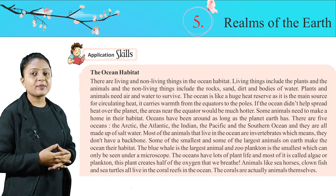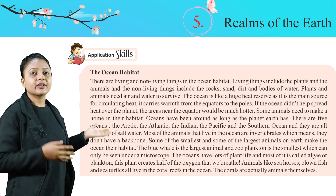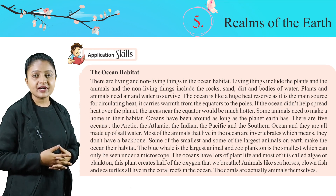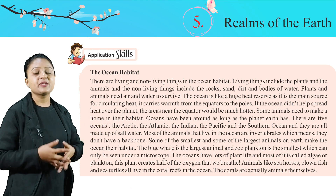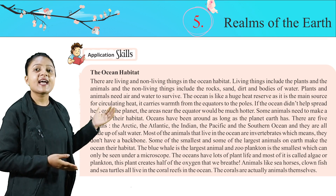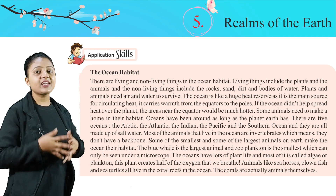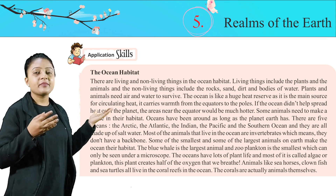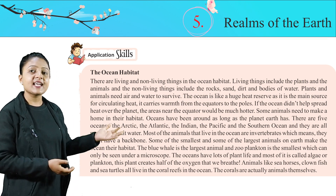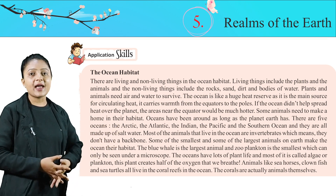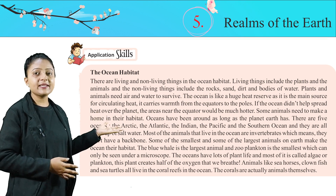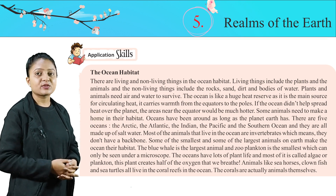They are all made up of salt water. Most of the animals that live in the ocean are invertebrates, which means they don't have a backbone. Some of the smallest and some of the largest animals on Earth make the ocean their habitat. The blue whale is the largest animal, and zooplankton is the smallest, which can only be seen under a microscope.